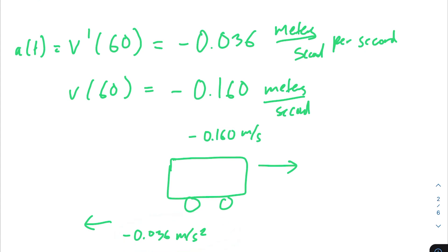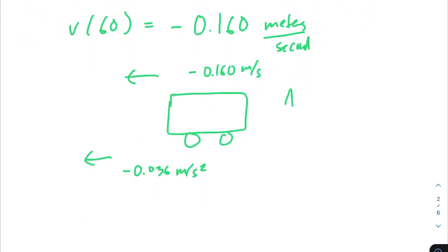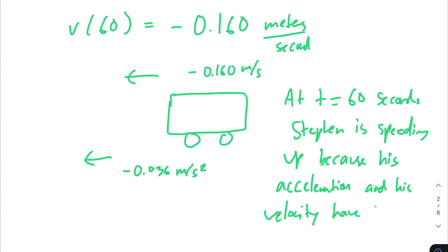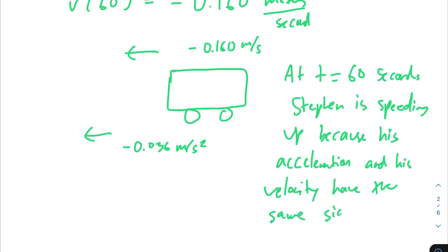I use car analogies because it's more natural to think about it that way — the car or swimmer is moving to the left and also accelerating to the left, so it's speeding up. At t equals 60 seconds, Stephen is speeding up because his acceleration and his velocity have the same sign. That's enough justification for this problem.